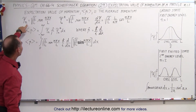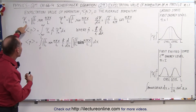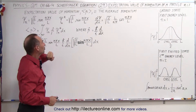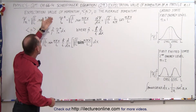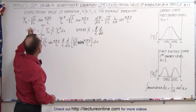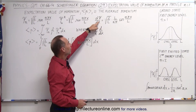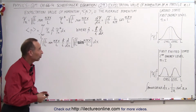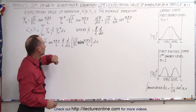Now if this is the wave function of a particle in a one-dimensional box for any energy level n, then this is called the complex conjugate. Since we don't have an i in there, the complex conjugate is exactly the same as the original wave function. And here's the derivative of the wave function with respect to x, which we're going to need in just a moment because we're going to use what we call the momentum operator.